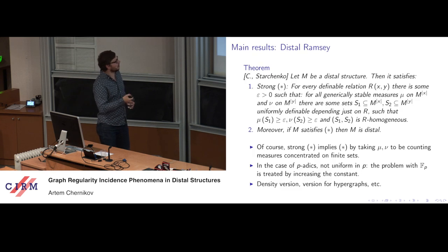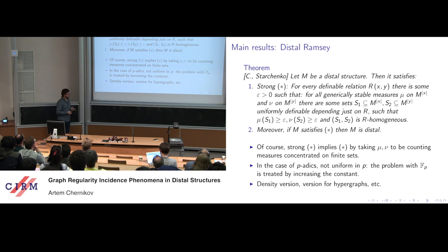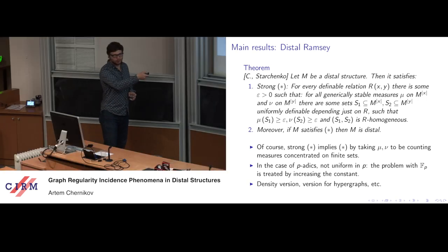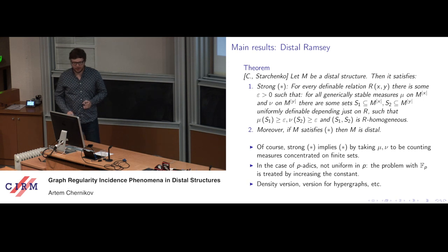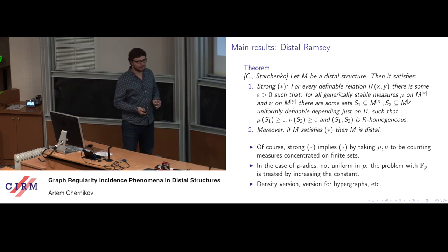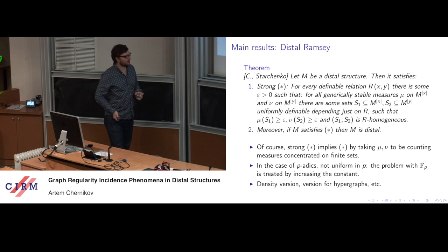One remark: this result applies to p-adic fields for a fixed p. The issue with algebraically closed fields of positive characteristic was that for larger and larger finite fields, no uniform constant works. For p-adic fields, that trouble is resolved by increasing the constant — but this property is not uniform in p. Using this basic result, one can amplify it in various ways: a density version that specifies what kind of homogeneous pair will be found, and generalizations to hypergraphs.